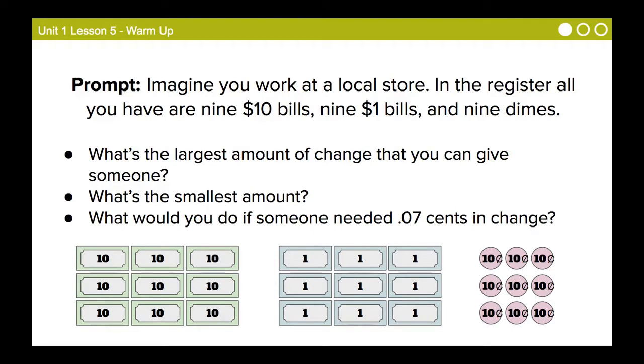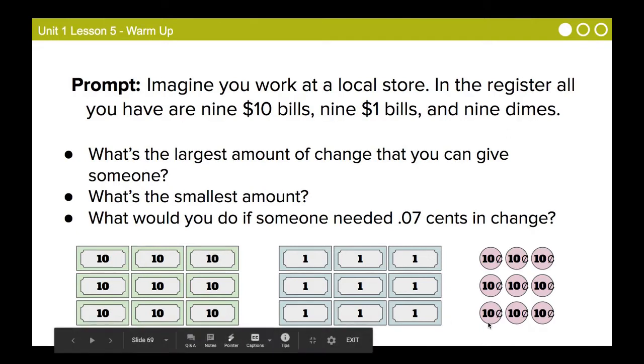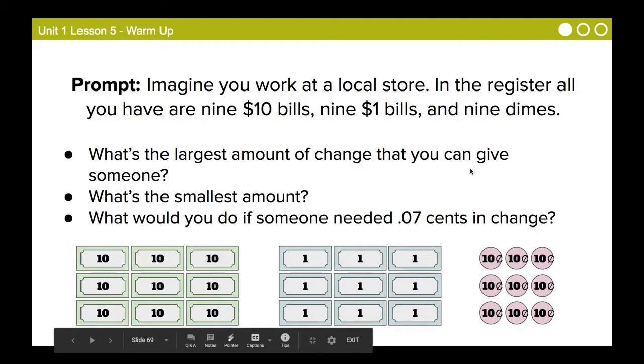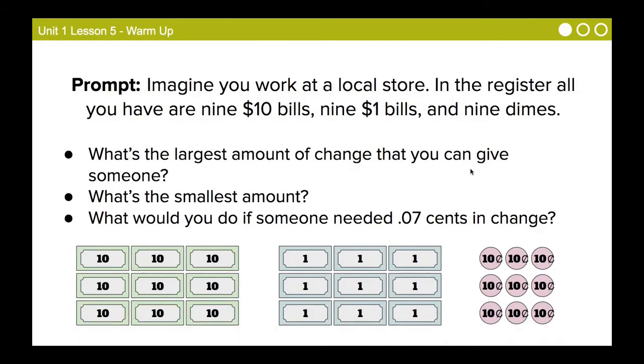So the largest amount of change that you could give someone, well, that would be all the money that you have. So we would just add this together, nine $10 bills, nine $1 bills, and nine dimes. And so the largest amount of change that you can give someone is $99.90. The smallest amount? Well, the smallest amount would just be one dime, $0.10, which begs the question, what would you do if someone needed $0.07 in change? Well, you couldn't do it because you don't have a way to divvy that up into $0.07.